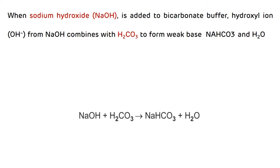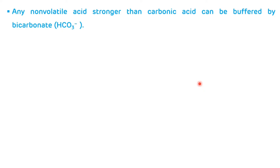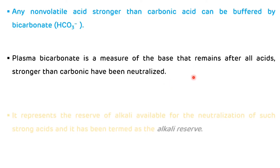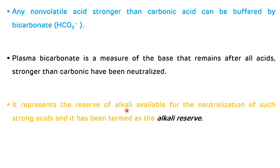When sodium hydroxide is added to the bicarbonate buffer, the hydroxyl ion from NaOH combines with H2CO3 and forms the weak base NaHCO3 and H2O — so the strong base is converted to a weak base. Any non-volatile acid stronger than carbonic acid can be buffered by bicarbonate. Plasma bicarbonate is termed the alkali reserve of the body, as it represents the reserve of alkali available for neutralization of strong acids.